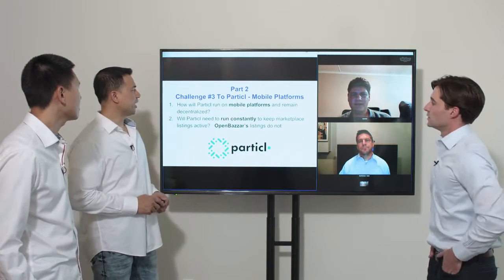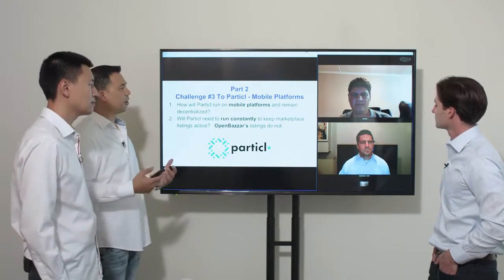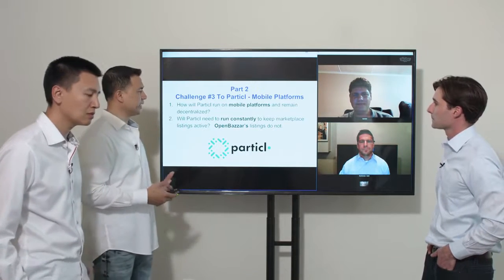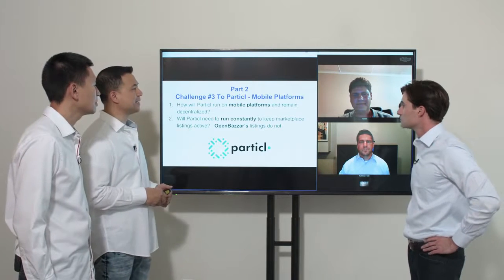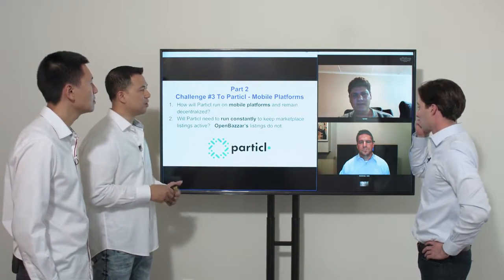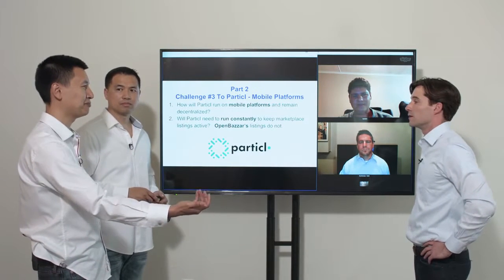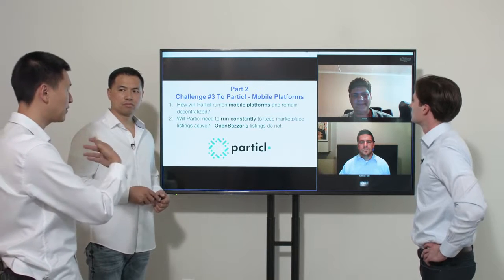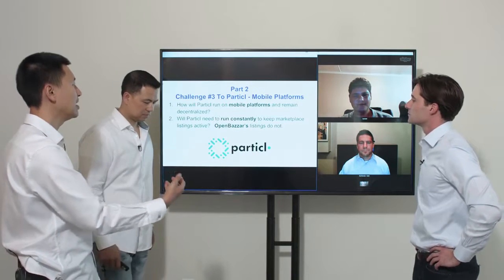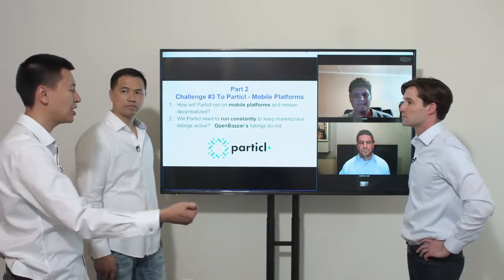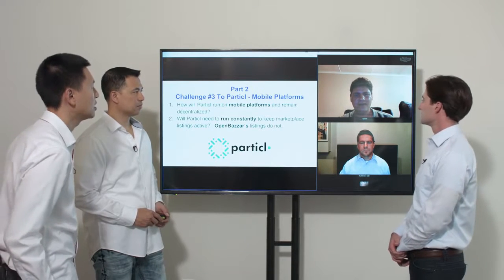The third challenge is mobile platforms. How will Particle run on mobile platforms and remain decentralized? From our understanding, Particle needs to run constantly to keep marketplace listings active — unlike Open Bazaar, which can't run on mobile. How is Particle going to solve that problem? Mobile is the primary computing device right now. I can get Amazon and eBay on an app — how am I going to run Particle on my iPhone or Android?